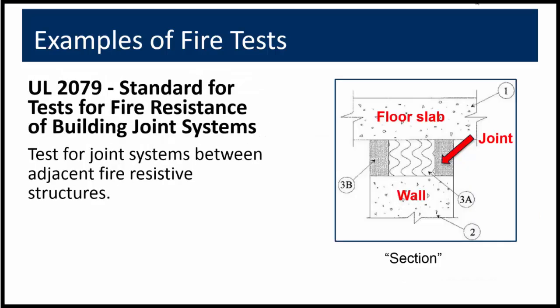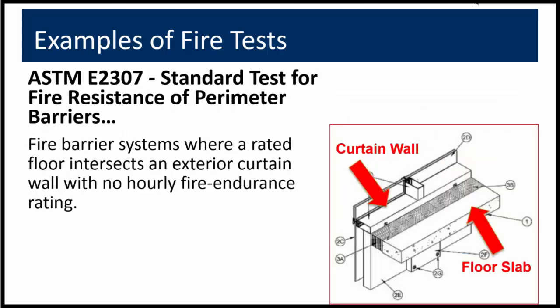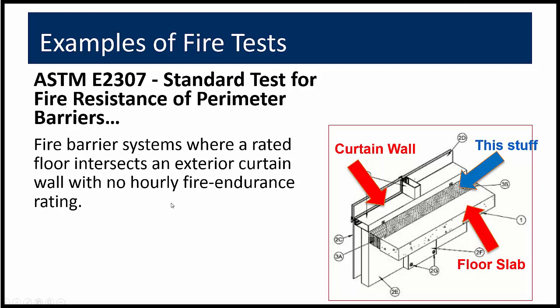UL2079 is applicable to joint systems that are intended for use in linear openings between adjacent fire-resistive structures. For example, the illustration shows the joint where a fire rated wall meets a fire rated floor slab. The joint materials we are most familiar with include the various fire caulks. ASTM E2307 applies to perimeter fire containment systems where a rated floor adjoins a curtain wall with no hourly rating, and addresses the materials intended to fill the gaps between the floor and curtain wall to prevent the vertical spread of fire in the building.